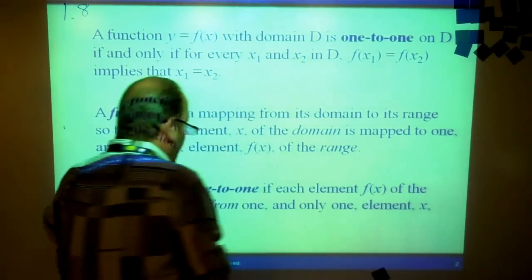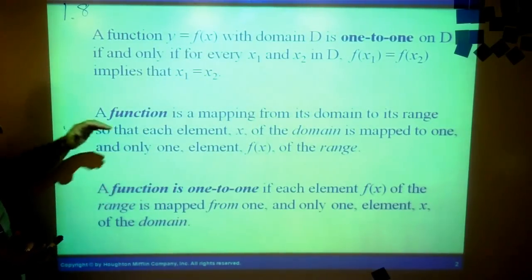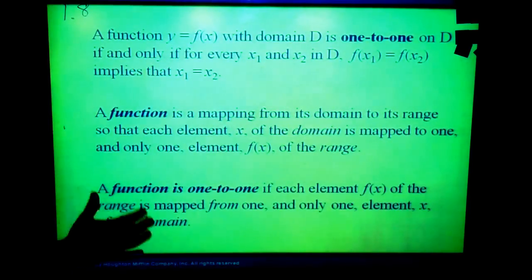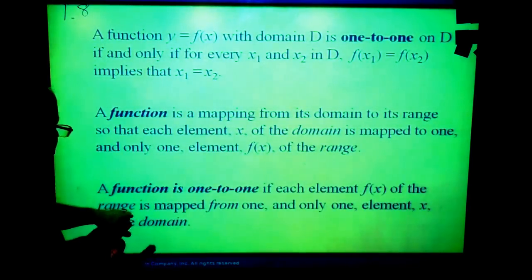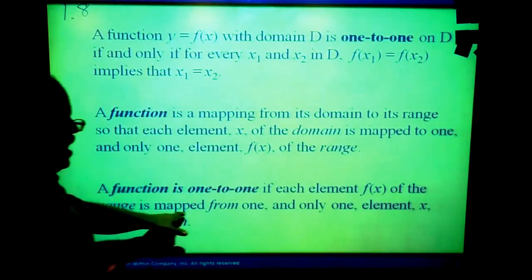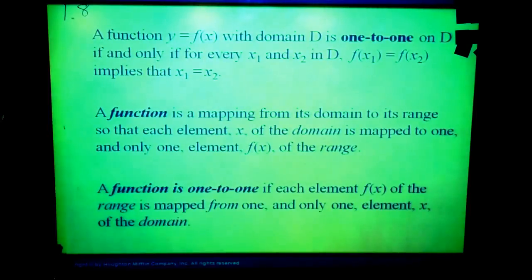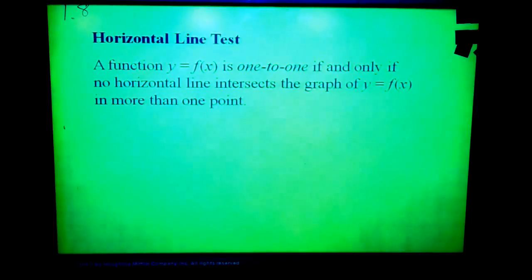So one-to-one, if each element f(x) of the range, each member of the set of possible y's is mapped from one and only one element of x. It's kind of like the backwards, the reverse of the definition of a function.